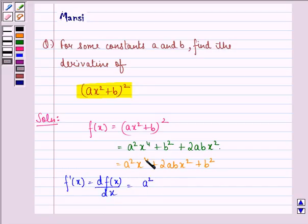So a² remains as it is, the derivative of x⁴ with respect to x is 4 times x⁴⁻¹, that is 3, plus 2ab times 2 times x plus 0.